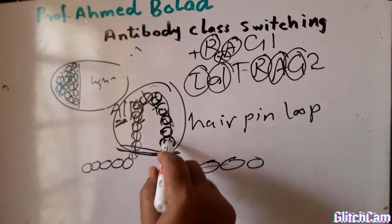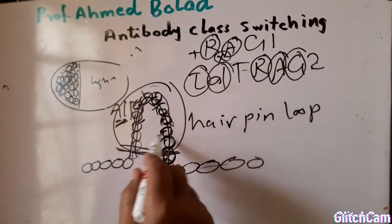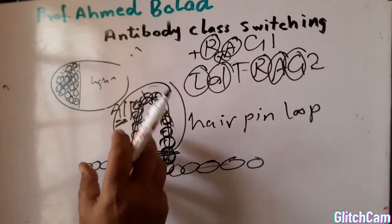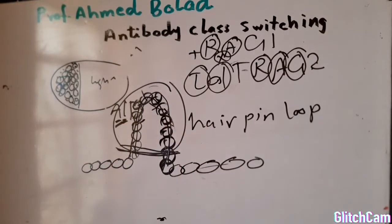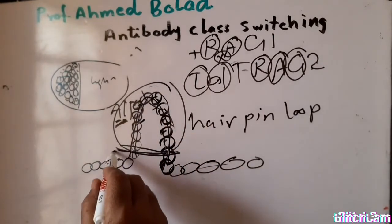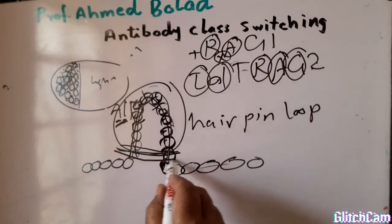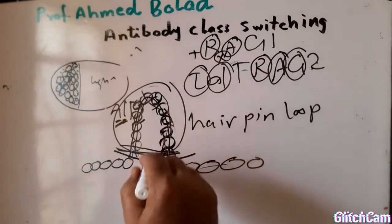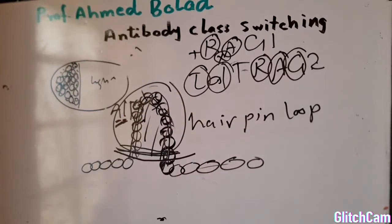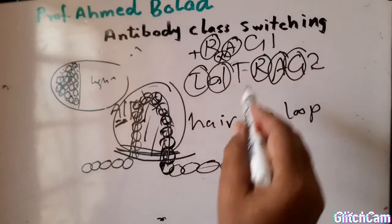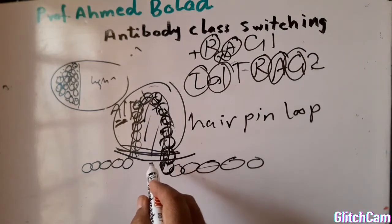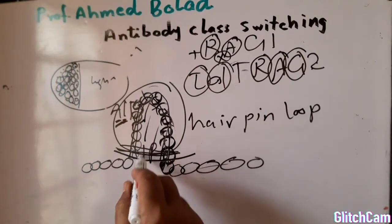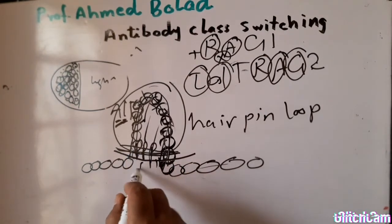This is a single strand, but it appears as if it is two strands. RAG1 and RAG2 cleave this area and chop it out, so this section moves out.